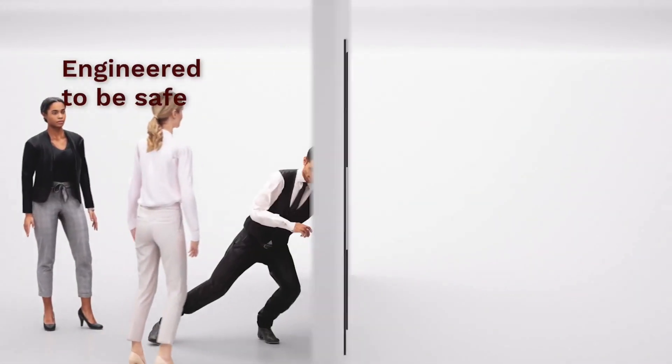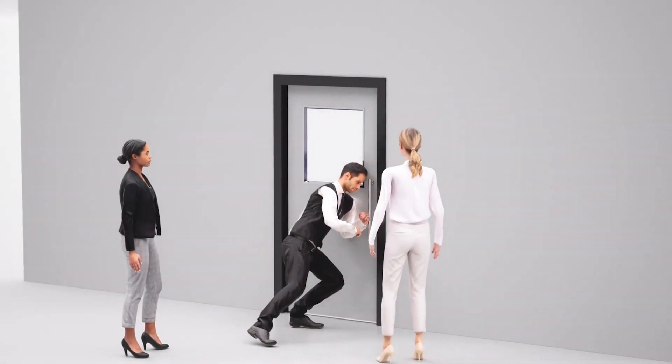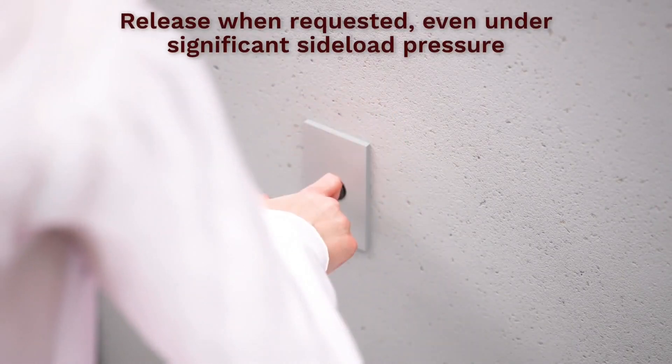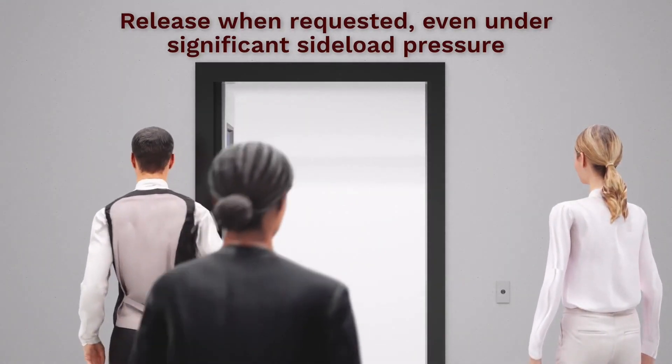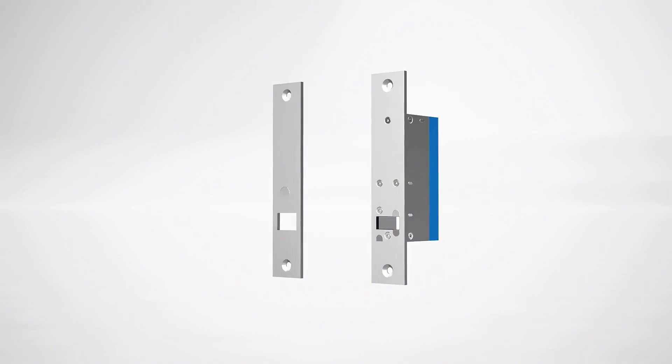The YD-30 series is also engineered to be safe. Even under significant side-load pressure, the YD-30 locks will still release when requested. On a swing door, this pressure could be from either side, keeping not just your property secure, but its occupants safe.